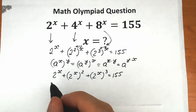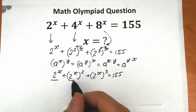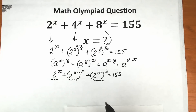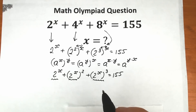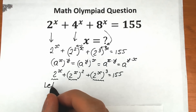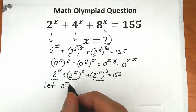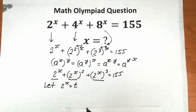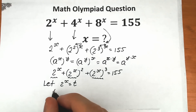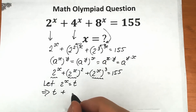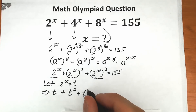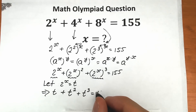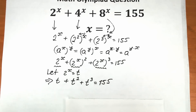If we look closely, we have the same expression 2 to the x appearing all three times, so it's great to use a substitution. Let's say 2 to the x equals t. Then we have t plus t squared plus t cubed equals 155.